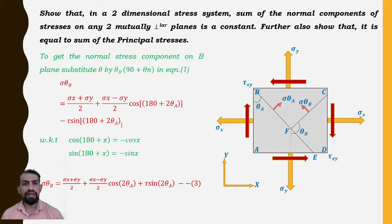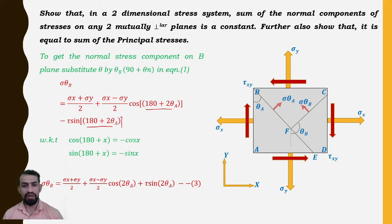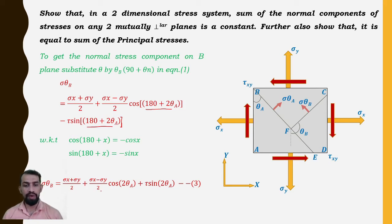Substituting 2×90° gives 180°, so the arguments become (180° + 2θ_a). Using the identities cos(180° + x) = −cos x and sin(180° + x) = −sin x, equation 3 simplifies to: σθ_b = (σx + σy)/2 − (σx − σy)/2 · cos(2θ_a) + τ·sin(2θ_a).